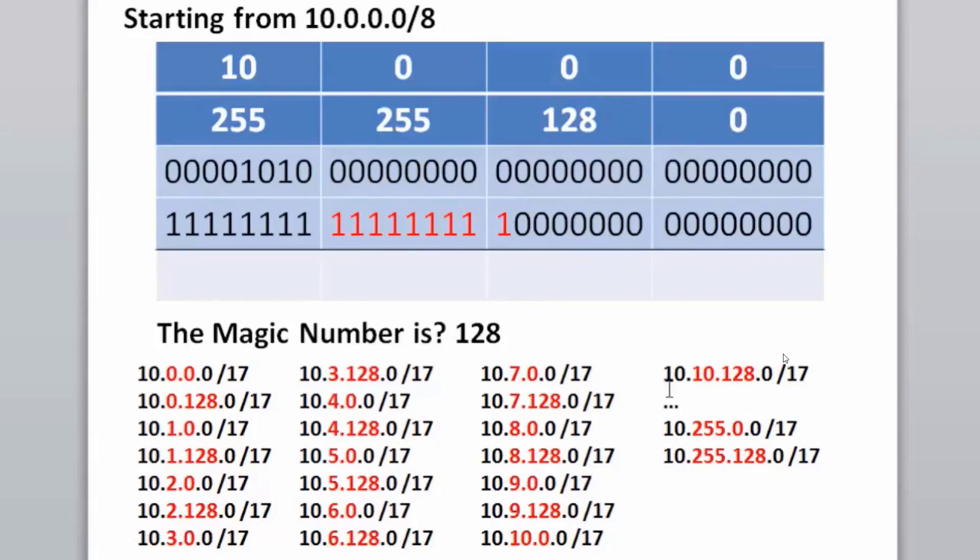If I was to list out every possible subnet, we'd go all the way up to 10.255.0.0, and the next subnet would be 10.255.128.0 slash 17 as our last subnet, for a total of 512 subnets. In a situation like this, there's many more subnets and many more hosts per subnet, but the rule of the magic number still applies.